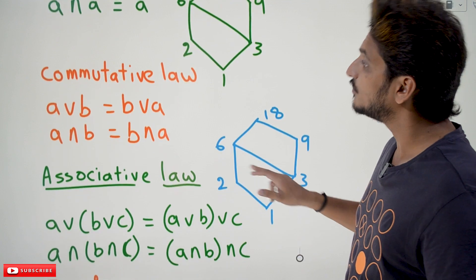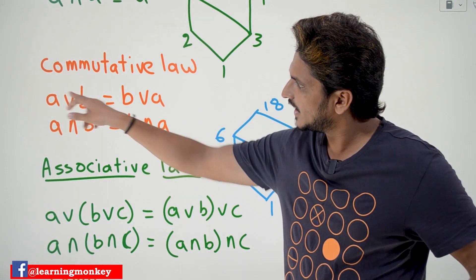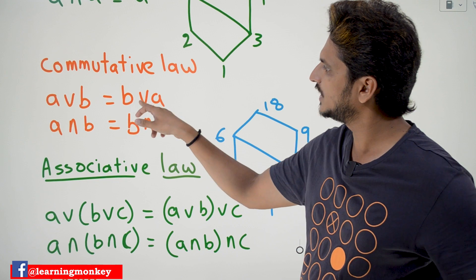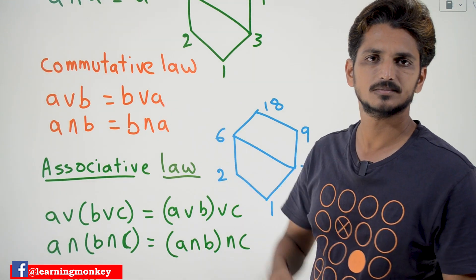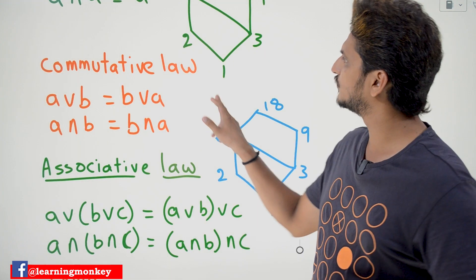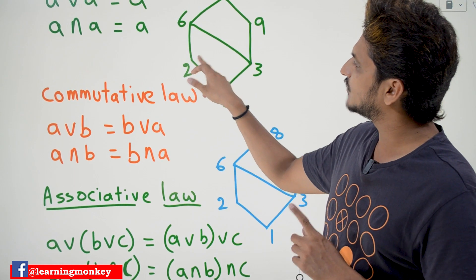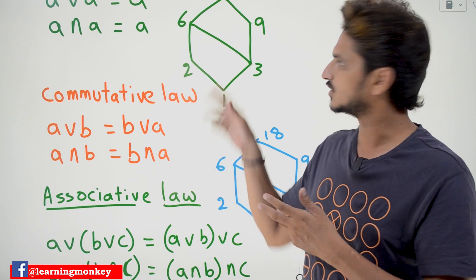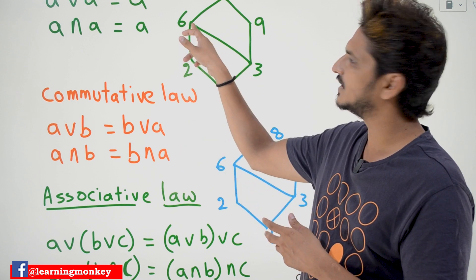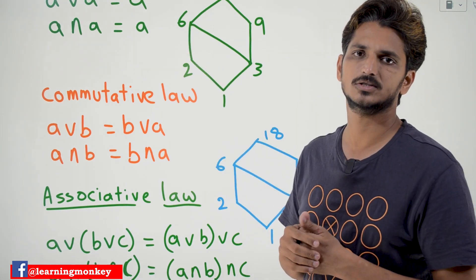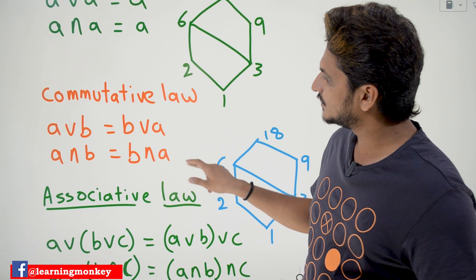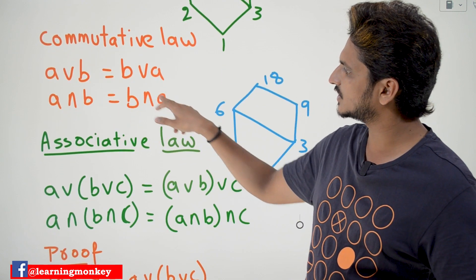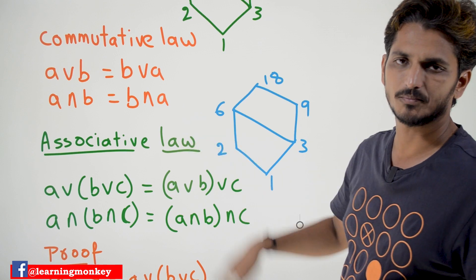The next one is the commutative law. A least upper bound B equals B least upper bound A — both are the same. If you find the least upper bound for 2, 3 or 3, 2, whatever the pair is, you are going to get the same element; it is not going to change. Similarly, A greatest lower bound of B equals B greatest lower bound of A — both are the same.